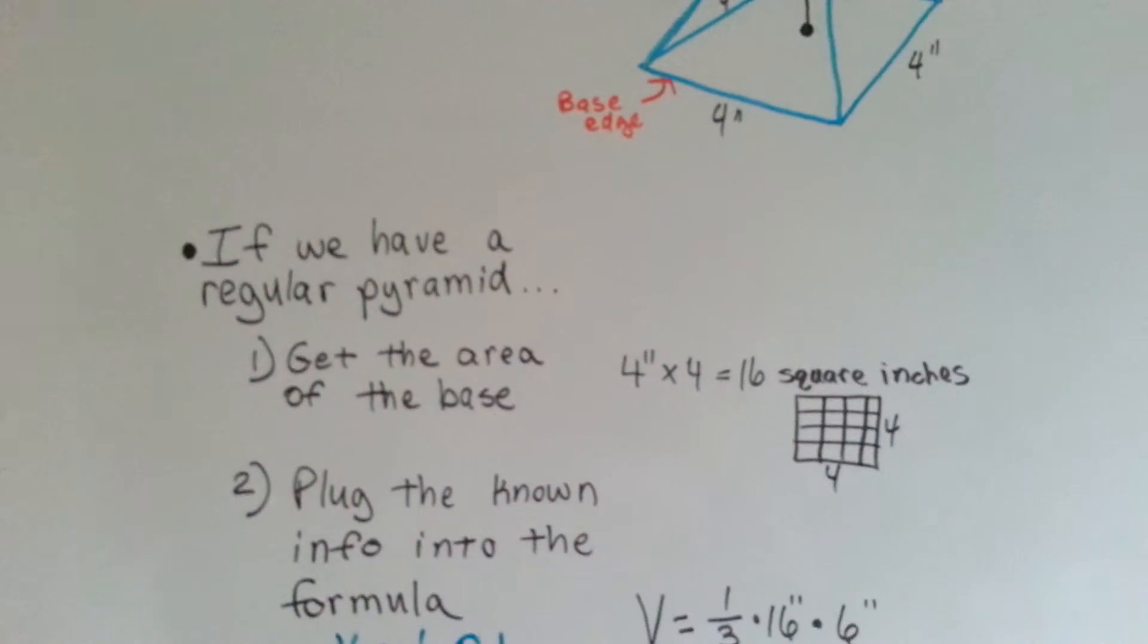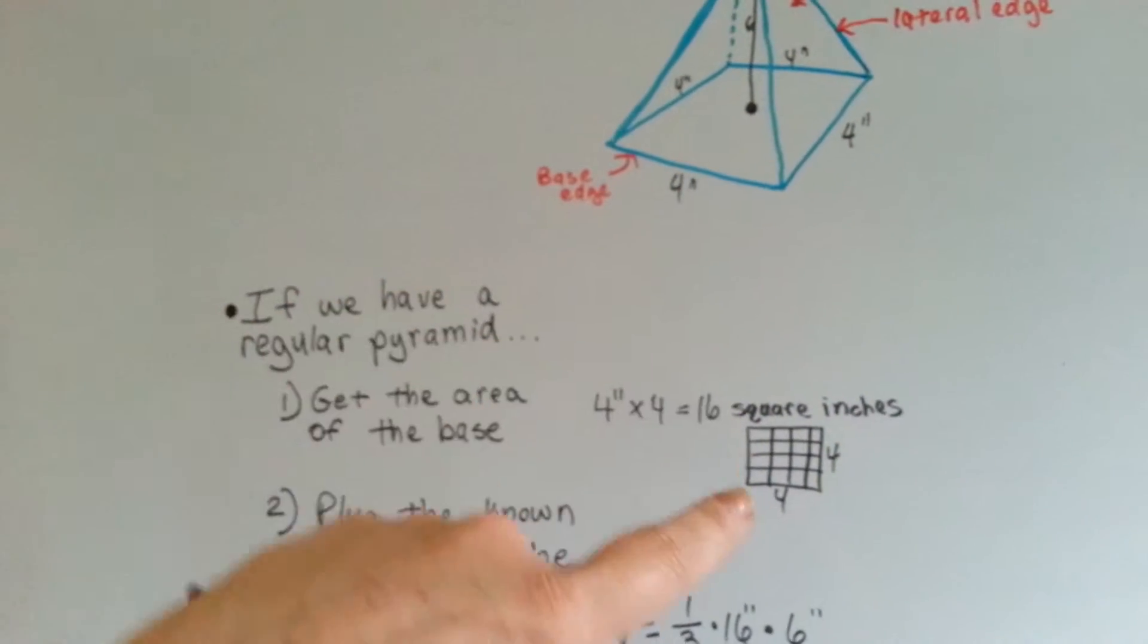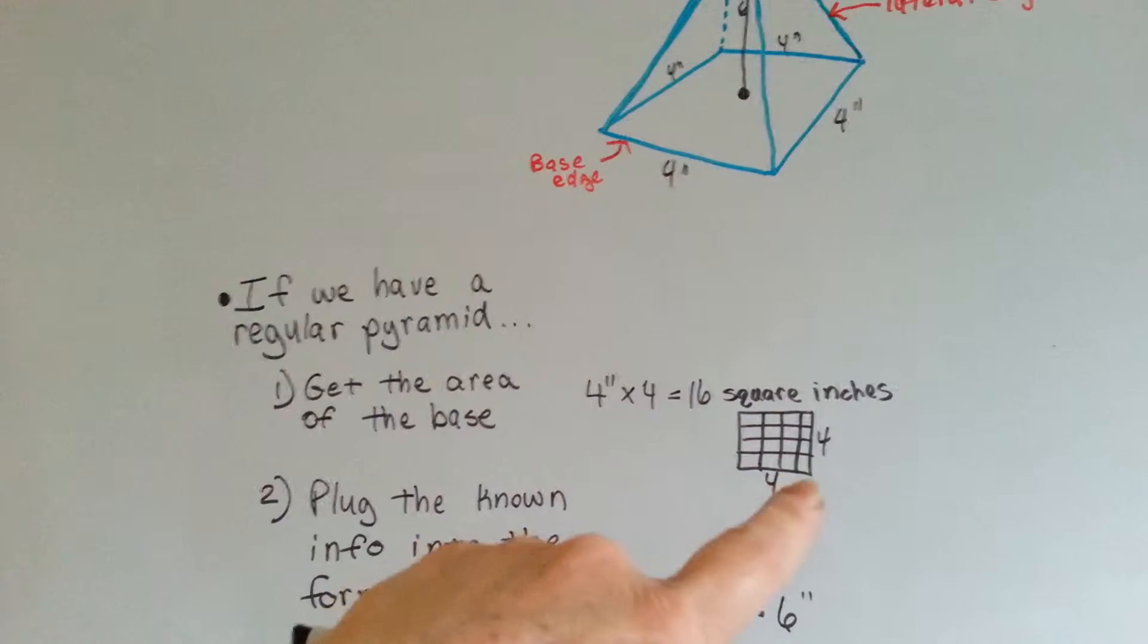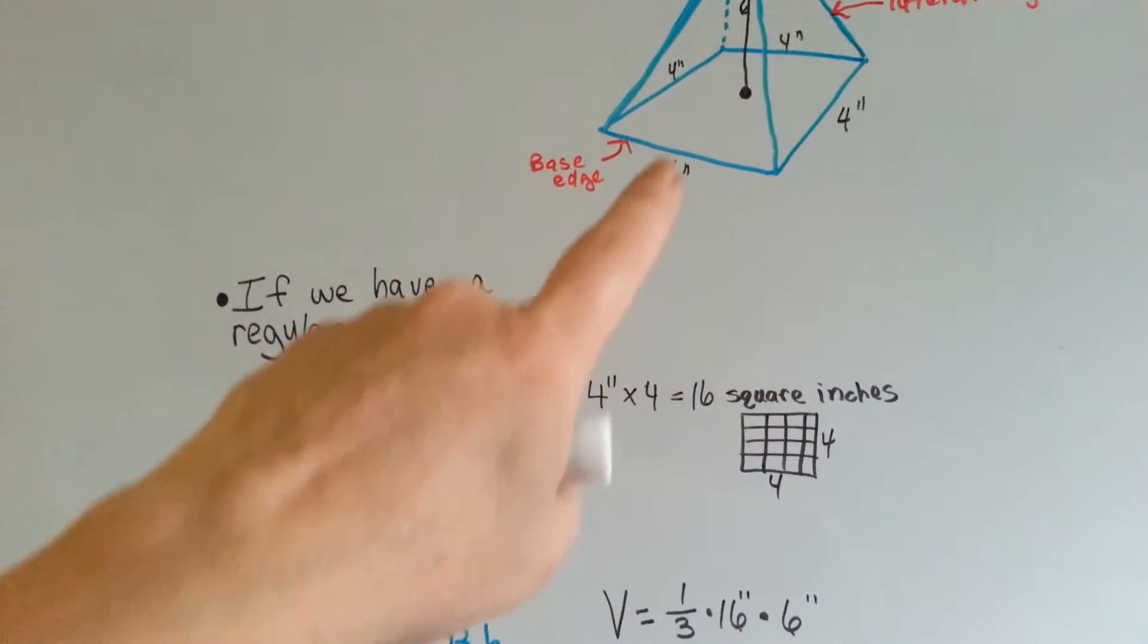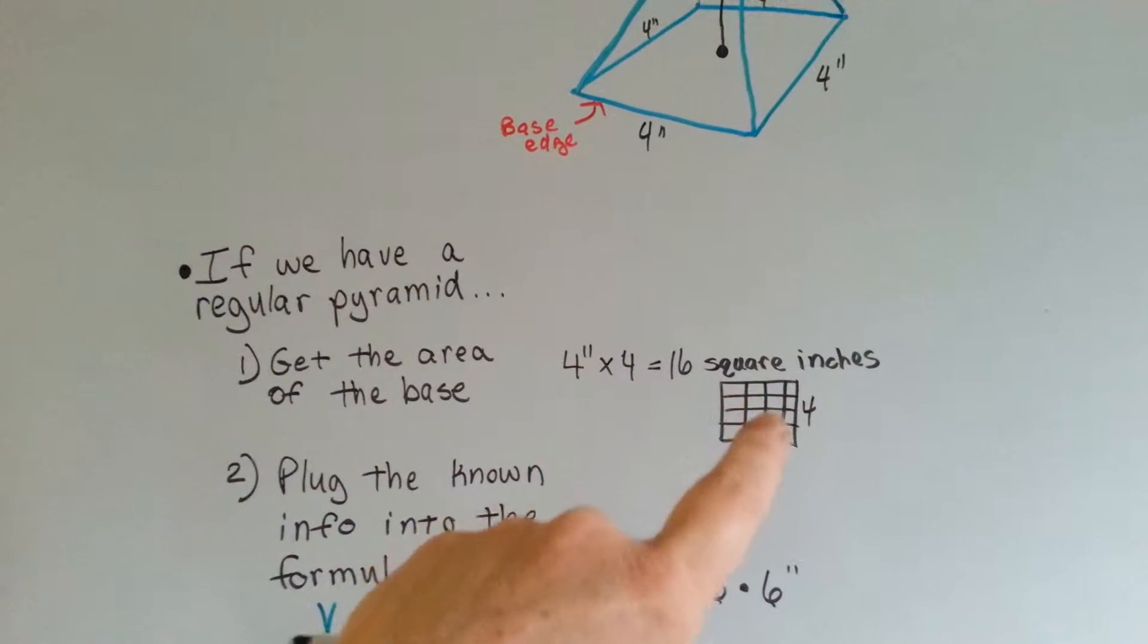If we have a regular pyramid, the first thing we do is we get the area of the base. The area of a square is a side times a side. If this is 4, then we've got 16 square inches. There's 16 squares in here.